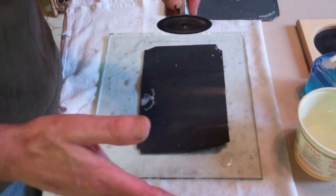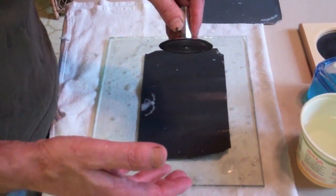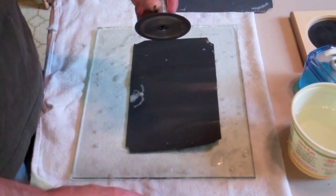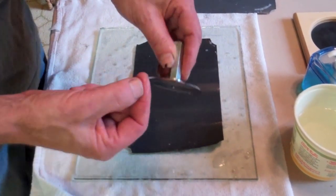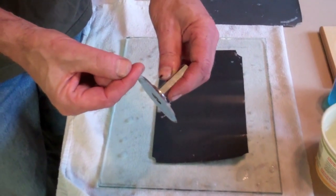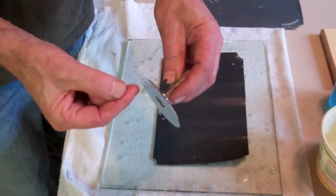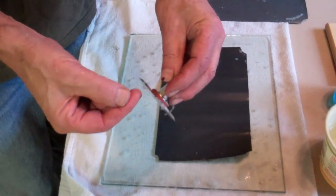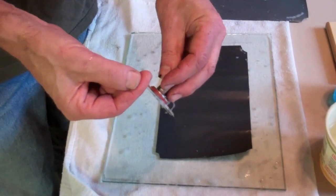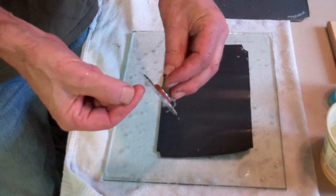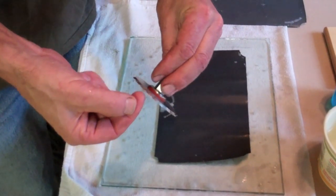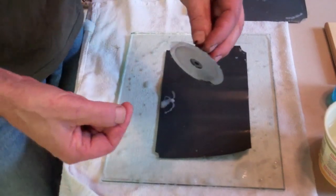But now how do you tell whether it's sharp or not? And the only way I know in the trades to tell whether these things are sharp is you take your fingernail and you run it across the blade. And if it grabs and takes a bit of fingernail off, then you know it's sharp. If it just slides right off without grabbing, you don't have to put much pressure on it. You just kind of like that. There's probably another way to do this, this is the only way I know to do it.